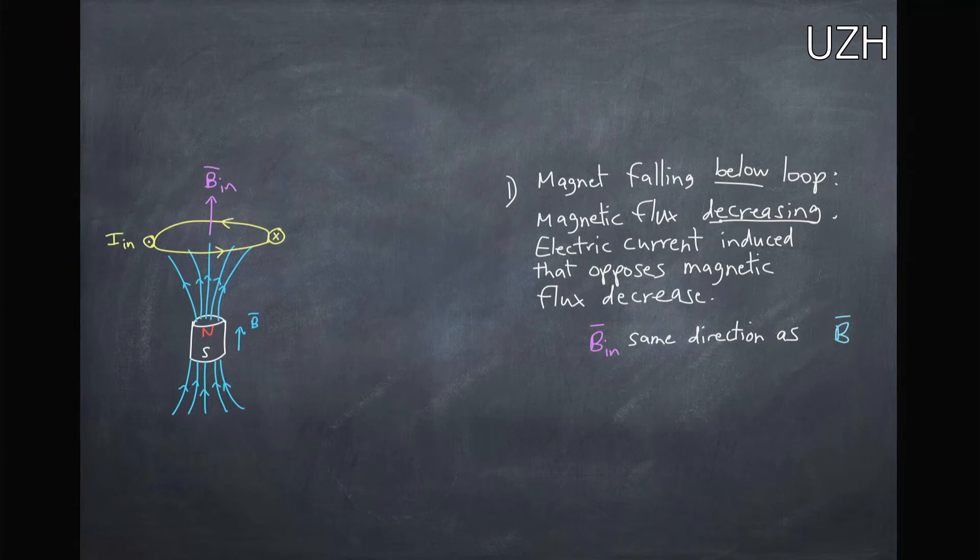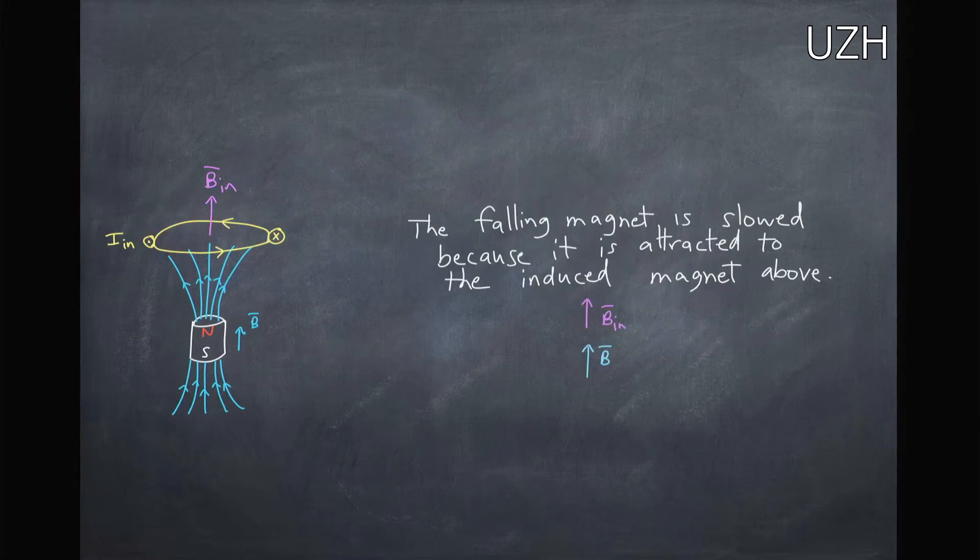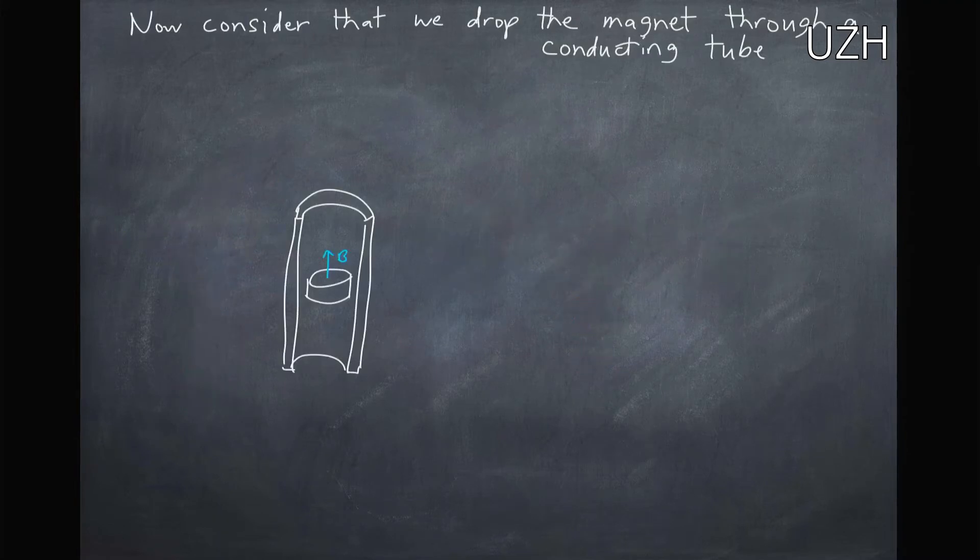You could use the right-hand rule and see that this current should be traveling in this direction. The falling magnet would then be slowed as it's going below the loop because it would be attracted to the induced magnet above. So in both cases when you're above or below the loop, you're going to have this force that's pushing it up.